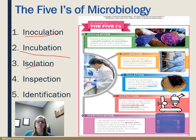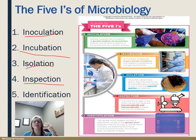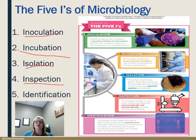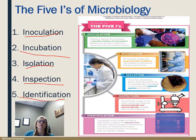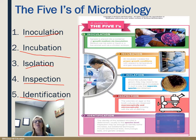Then we have inspection. We're going to have what we call colonies of growth on agar or in broth. They have to be observed macroscopically — macro meaning large, with your eyes — and then we have to look at them microscopically. Very often we have to use a stain so that we can differentiate one from the other. And that brings us to our last I: identification. We need to be able to identify it, hopefully to the species level but definitely to the genus. Inspection can be enough to identify some microbes, but most will need additional techniques including biochemical tests, immunologic tests, and genetic analysis.